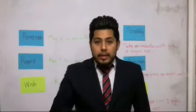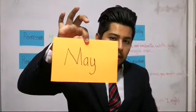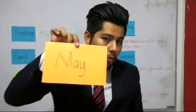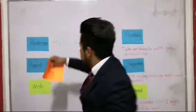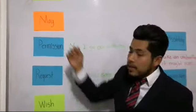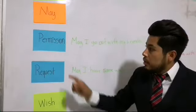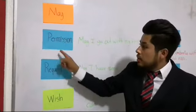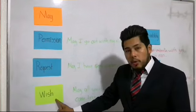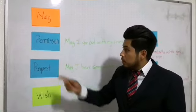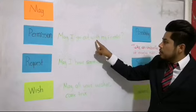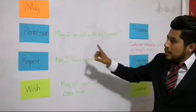So the first topic: may and might. Let's check when do we use may. May is a modal verb. We're going to use it for permission, request, and for a wish. Example of permission: May I go out with my friends? And I use may.